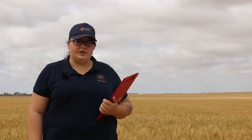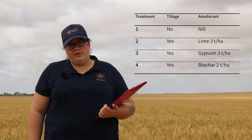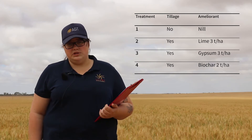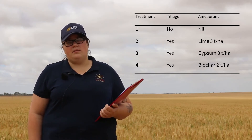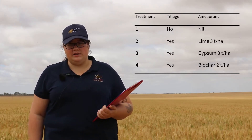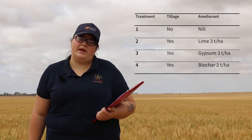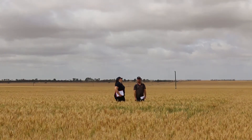For the demonstration we used four treatments: lime at three tonnes per hectare, gypsum at three tonnes per hectare, biochar at two tonnes per hectare, and an untreated control. We have two replications which have been randomised.